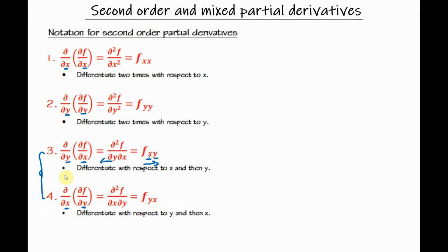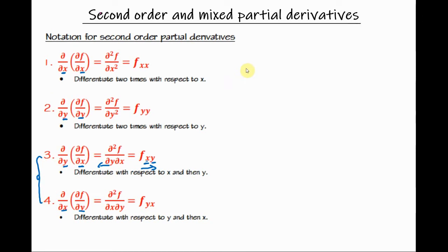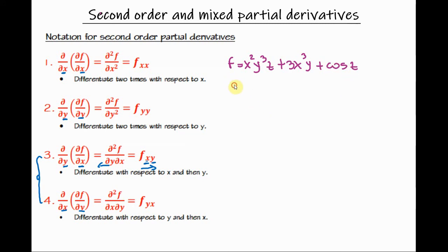To sum up, for second order partial derivatives there are a total of four possibilities. Let's do an example now. Given the function x squared y cubed z plus 3x cubed y plus cosine z, find the second order mixed partial derivative of the function.